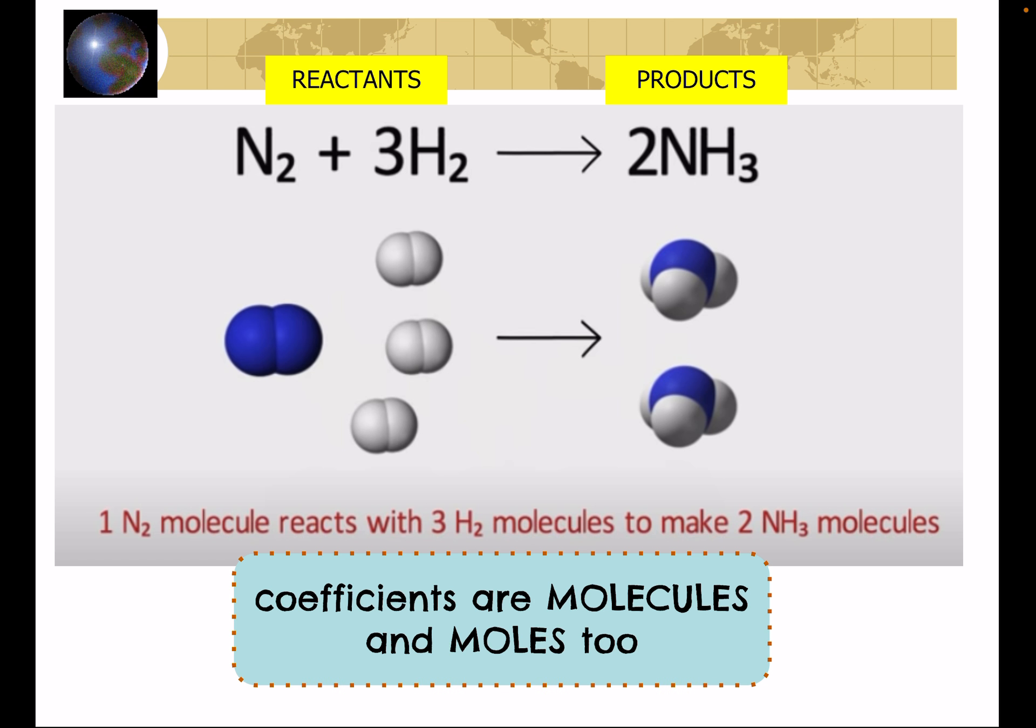Now something you need to know going forward is that these coefficients one, three, and two will also be moles. Because earlier remember I said one mole is equal to 6.022 times 10 to the 23rd molecules. Since moles and molecules are always related in the same way, we can use these coefficients for moles and molecules.